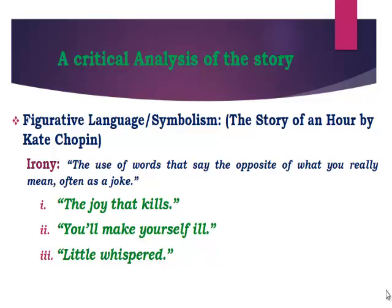The second ironical line is 'you will make yourself ill.' When we read between the lines, Louise locks herself in the room, and contrary to people's expectations, she is thinking about her new and free life. The third is 'whispered freedom' — freedom should be spoken out loudly, but Louise is not allowed to speak out because of the patriarchal society where you cannot do anything without your husband's permission.